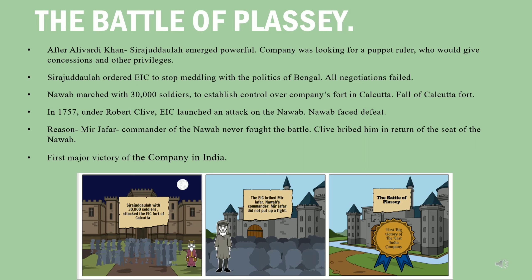Siraj ud-Daulah ordered the company to stop meddling with the politics of Bengal. Negotiations were tried but failed. So the Nawab marched with 30,000 soldiers to the English factory, locked the warehouse, disarmed all the Englishmen, and then marched to Calcutta to seize the company's fort, which led to the fall of the Calcutta fort.